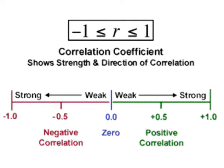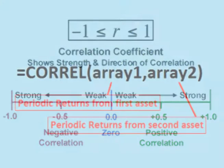If the correlation coefficient is close to 0, then the two assets have little or no correlation at all.